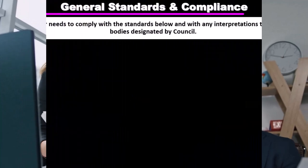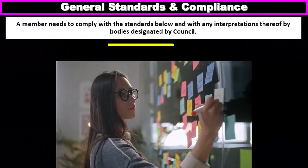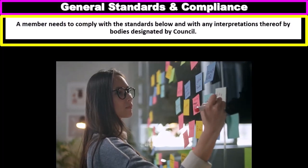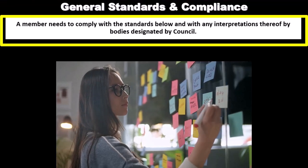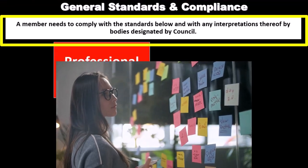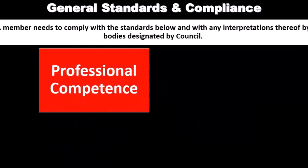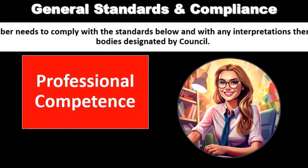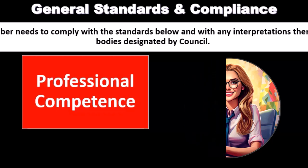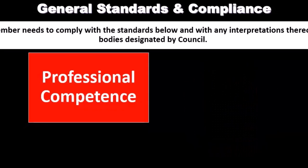Starting off with general standards and compliance, a member needs to comply with the standards below and with any interpretations thereof by bodies designated by counsel. That includes professional competence. We've got to make sure that they have professional competence. If we're in an audit engagement, we want to make sure that there is professional competence with regards to it. That may seem obvious, but note that not every audit is the same.